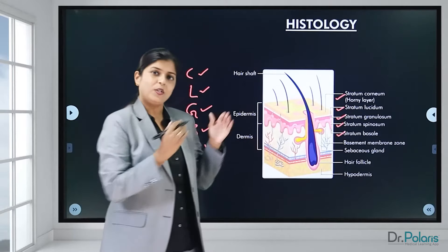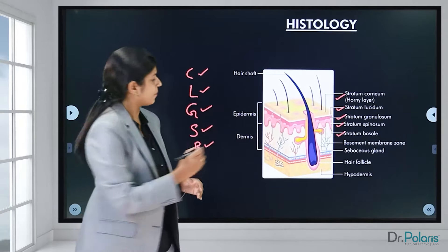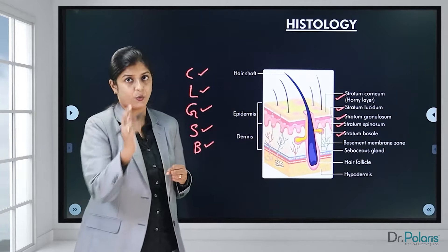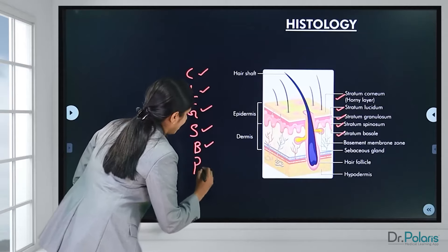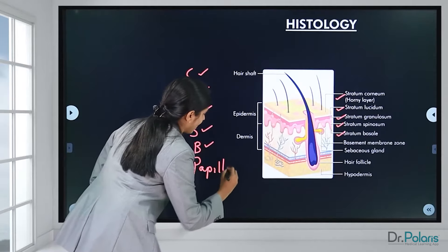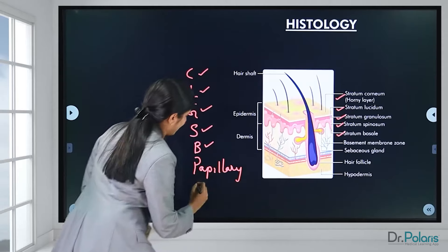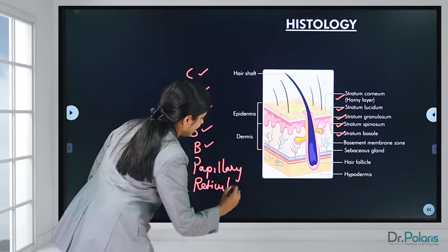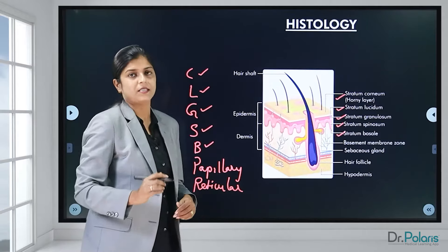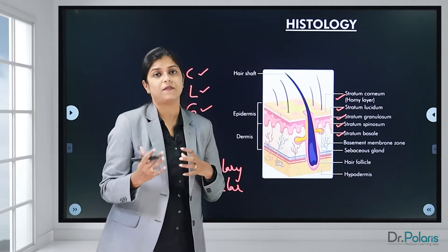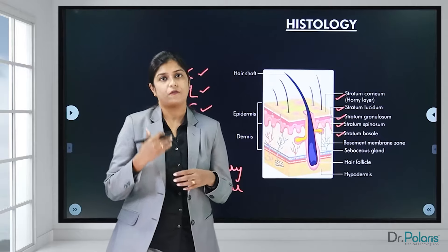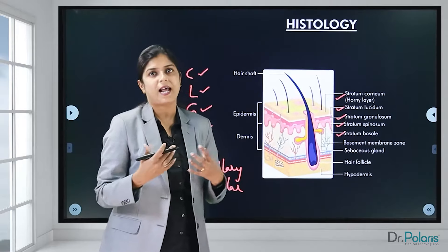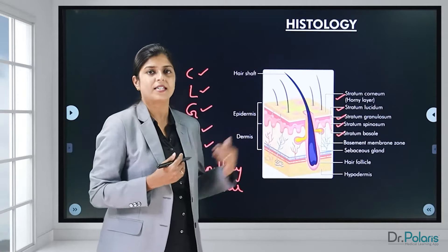Below the epidermis we have the dermis. The superficial portion is composed of loose connective tissue, known as the papillary dermis, and the deeper portion is composed of dense connective tissue, known as the reticular dermis. Apart from connective tissue, the dermis contains lot of nerve endings, sebaceous glands, sweat glands, and apocrine glands.